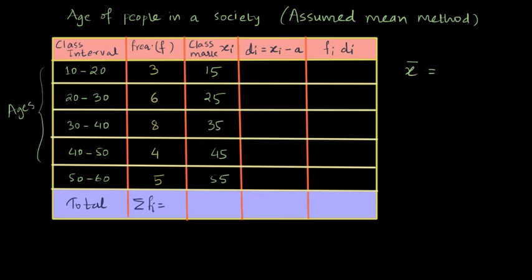So if I write mean as x bar, one of the methods is to sum up fi xi divided by summation fi. That means multiplying each frequency and the respective class mark and then summing that up and then dividing it by the total number of frequency.